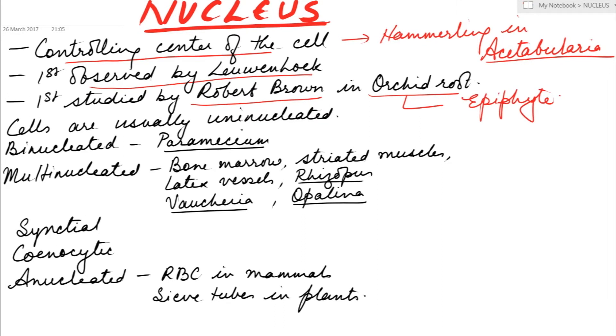Usually one nucleus is found present in the cell, known as uninucleated condition.